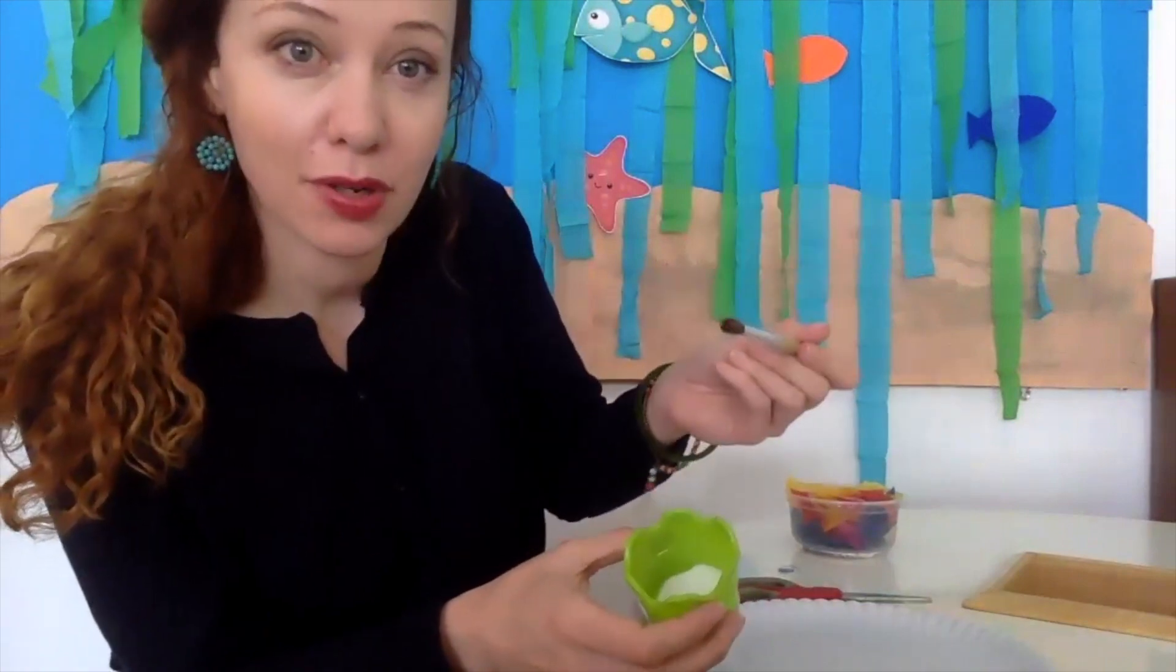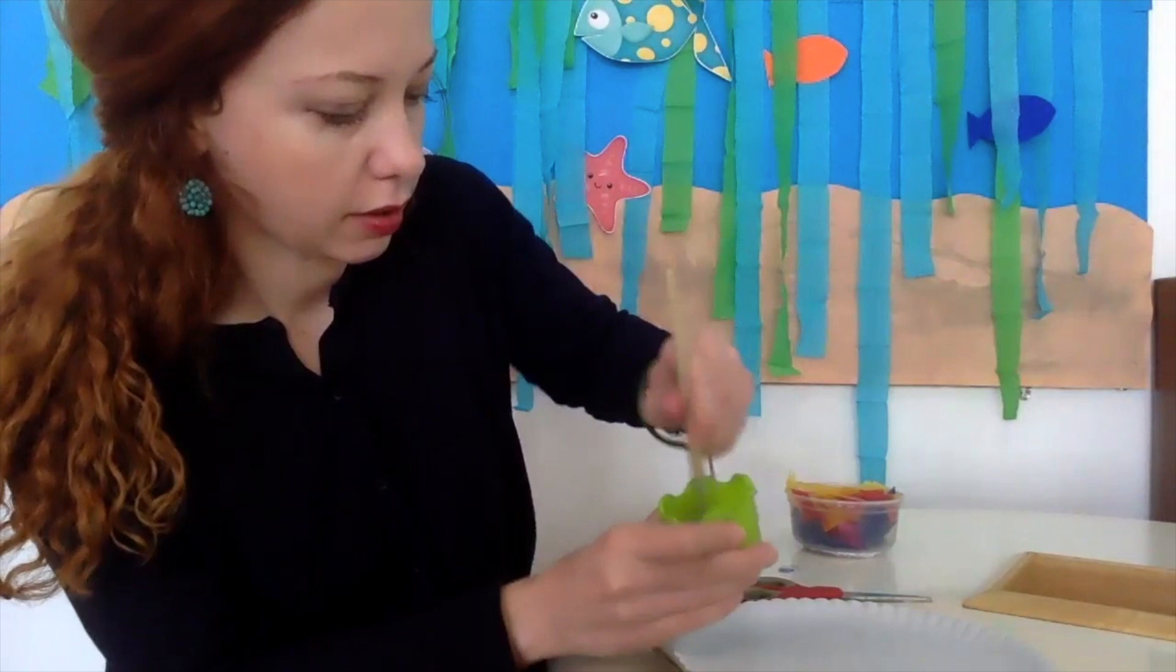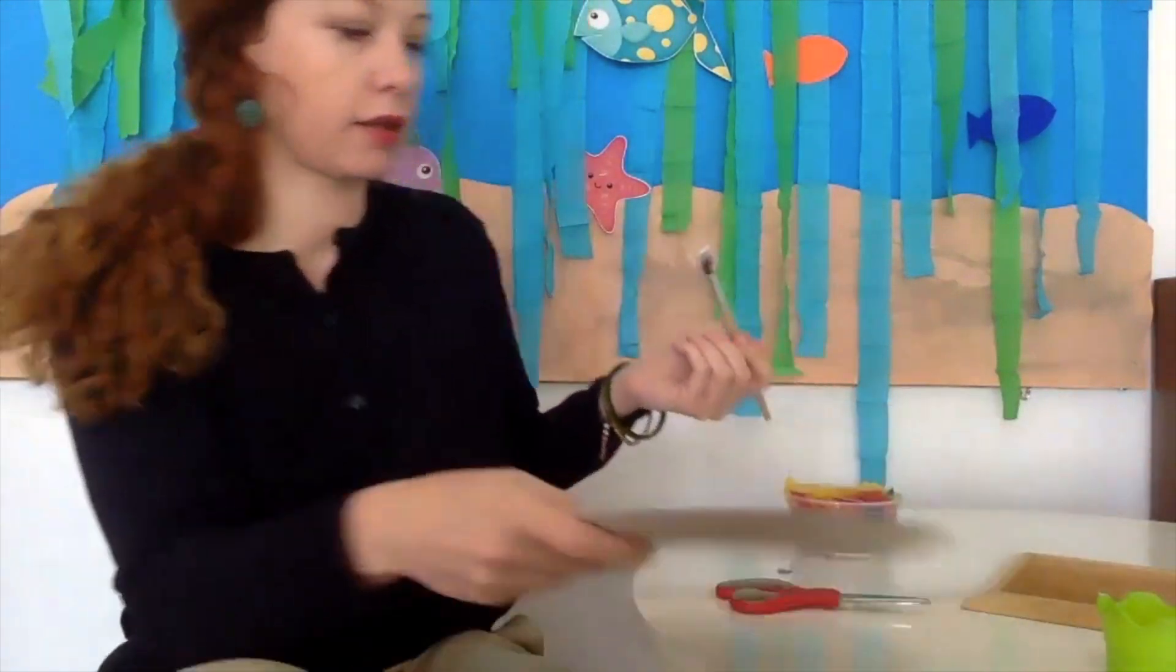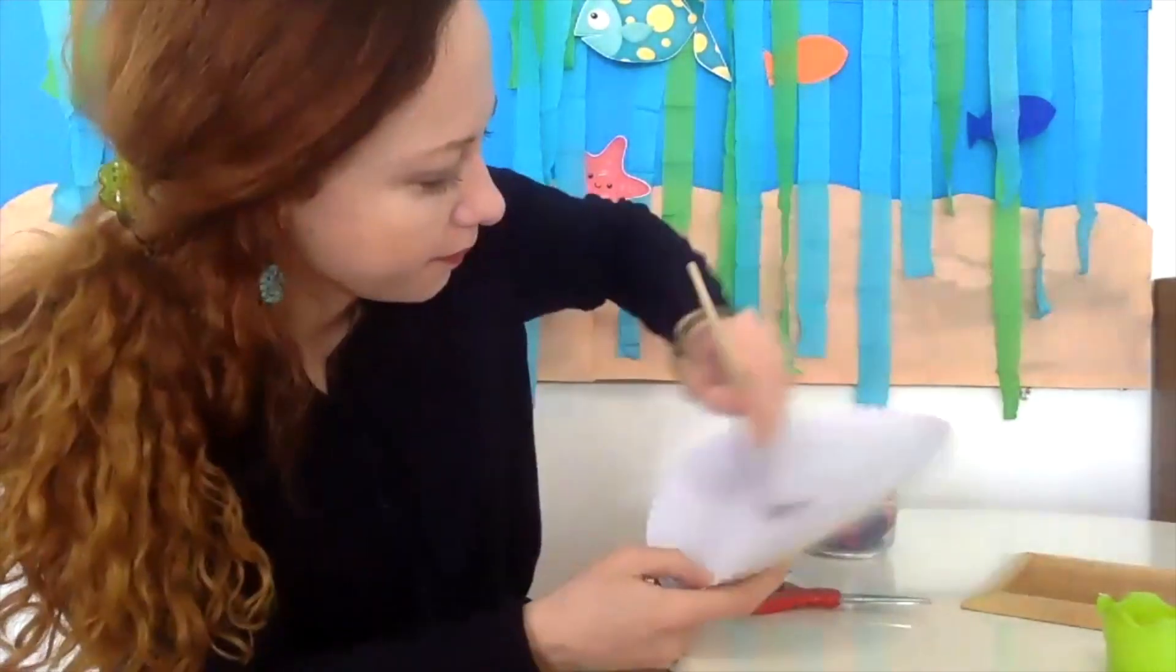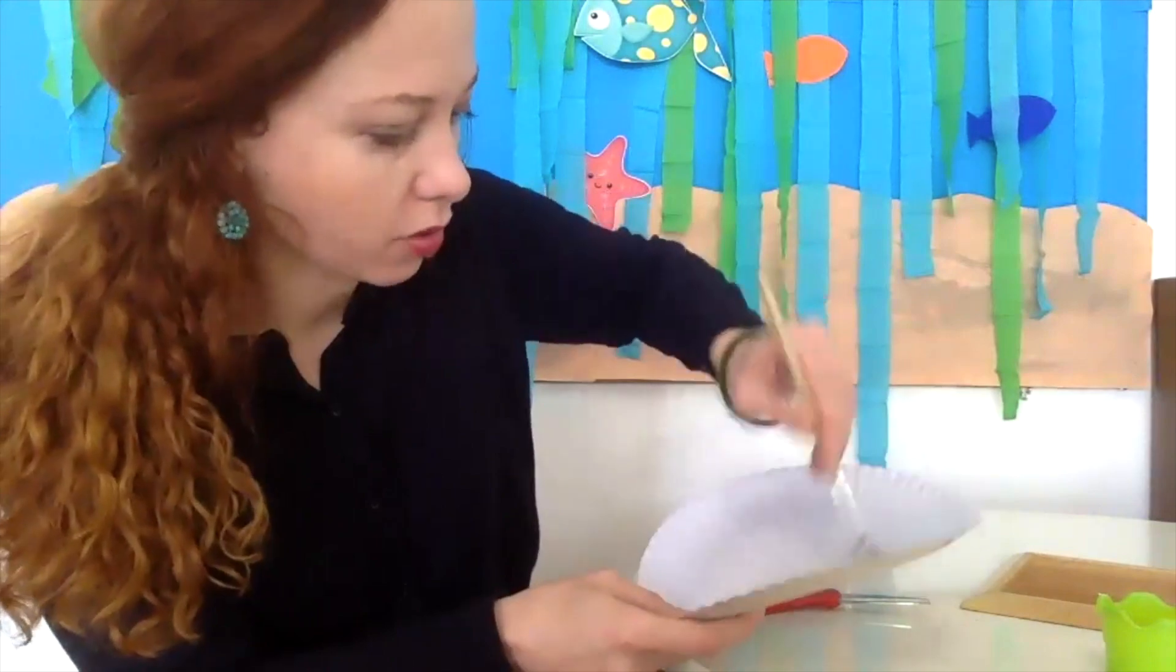Now what you're going to start with is getting your brush and some glue, and then dipping your brush in the glue and adding it to your paper like this. You go all over.